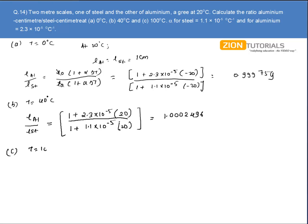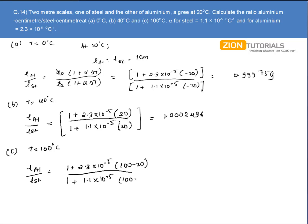For part C, if temperature is 100 degree Celsius, then the ratio is given by 1 plus 2.3 into 10 to the power minus 5 into (100 minus 20) divided by 1 plus 1.1 into 10 to the power minus 5 into (100 minus 20). On solving this I get the ratio as 1.00096.